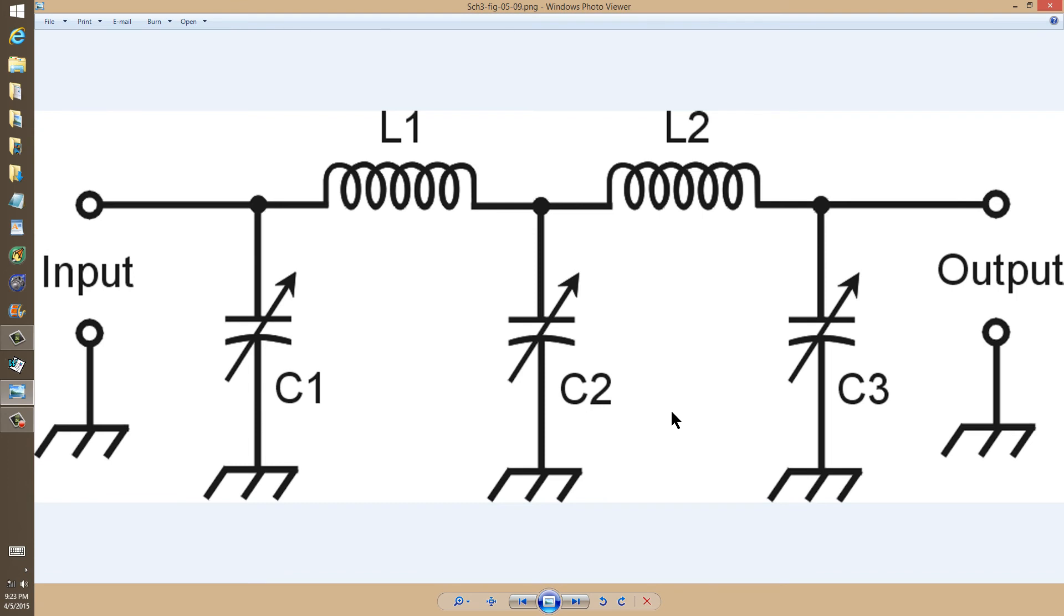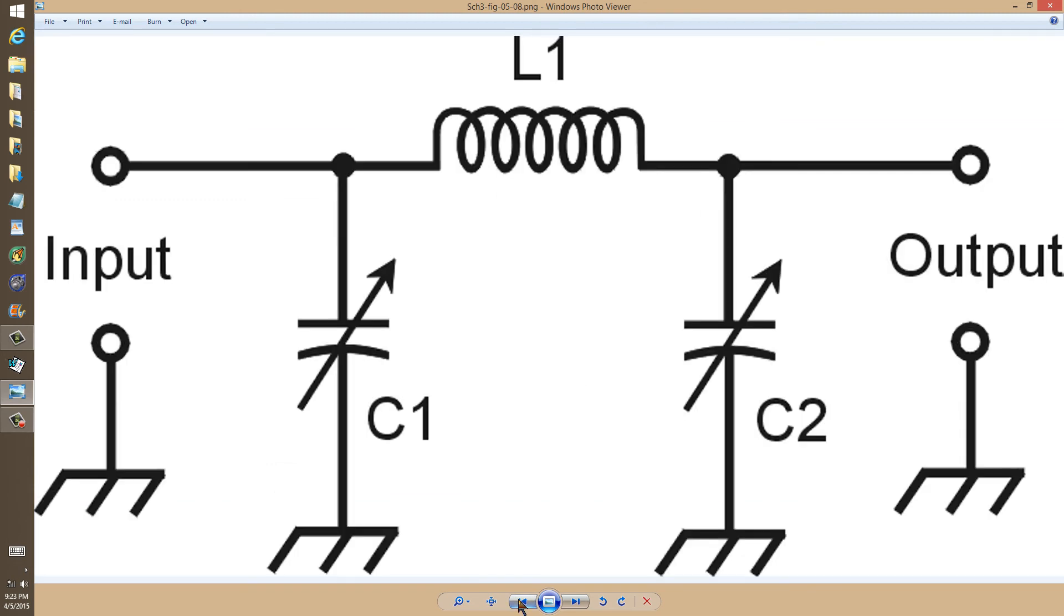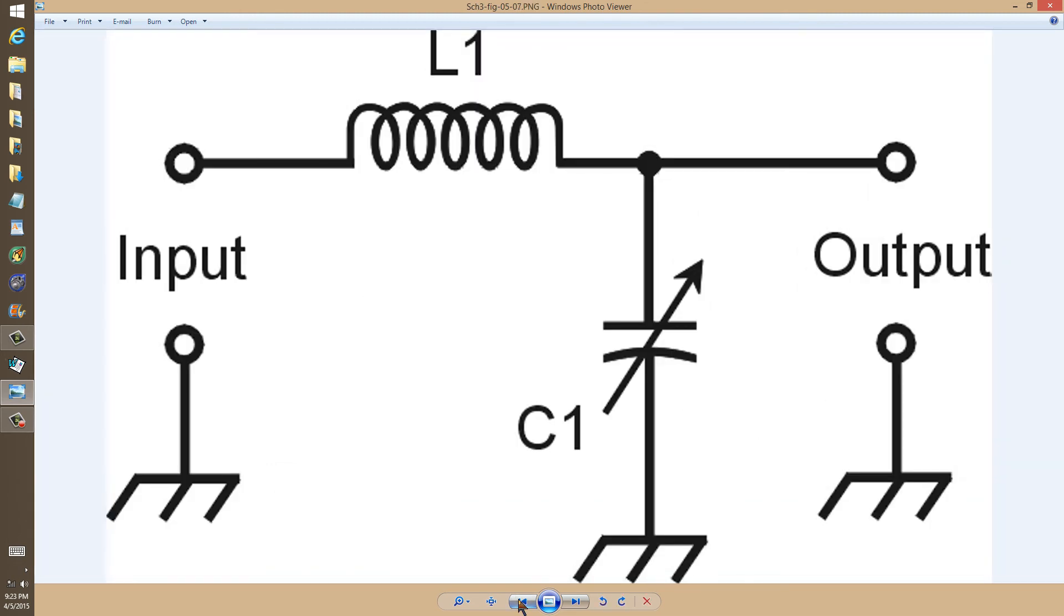Again, these three systems are intended for unbalanced transmission lines such as coaxial cable. The transmitter goes to the input. The antenna feed line goes to the output.